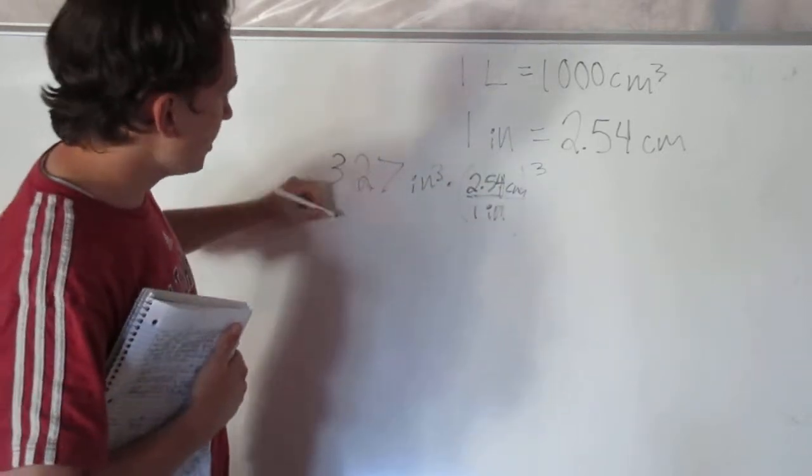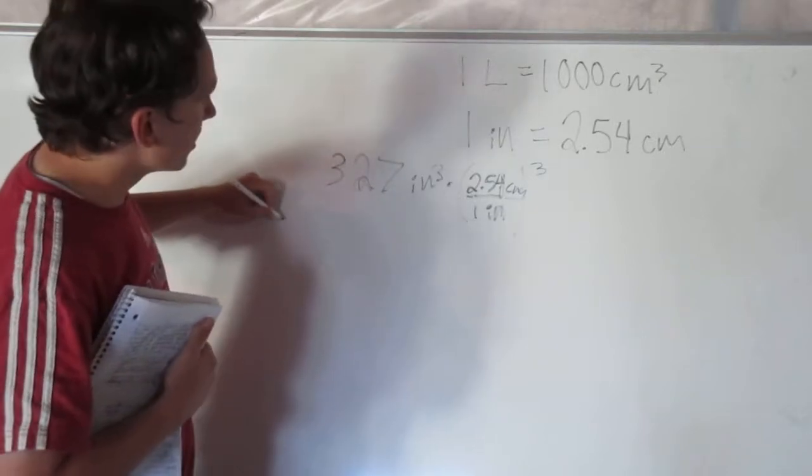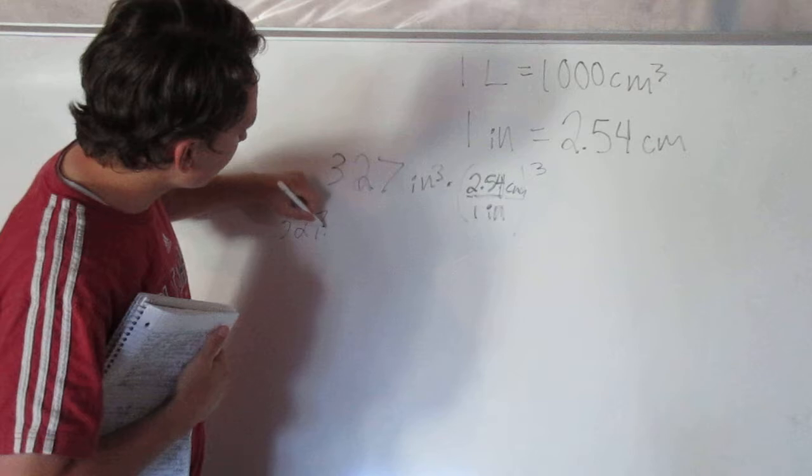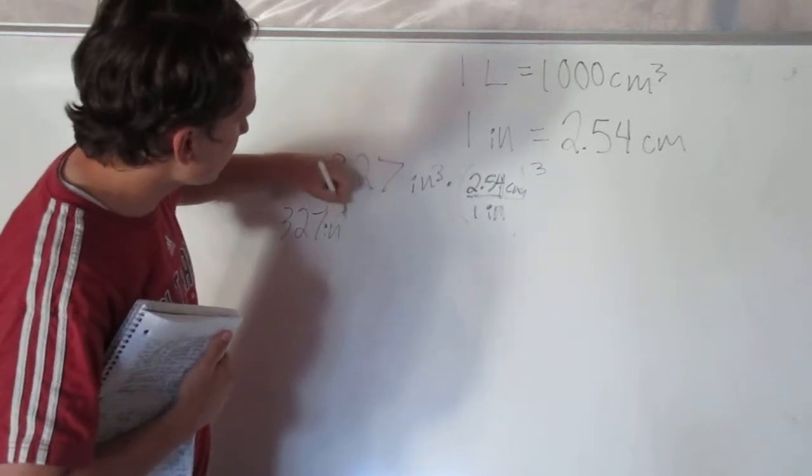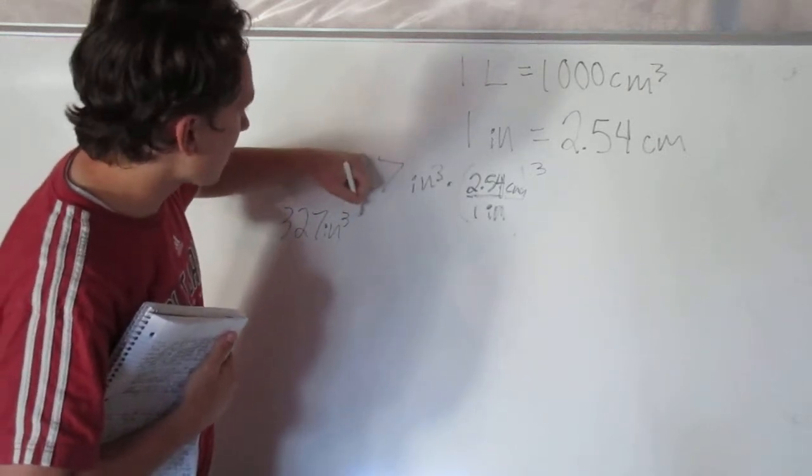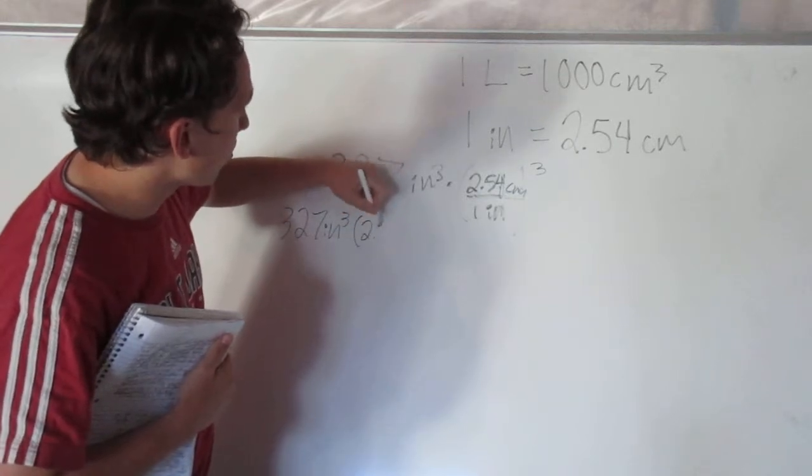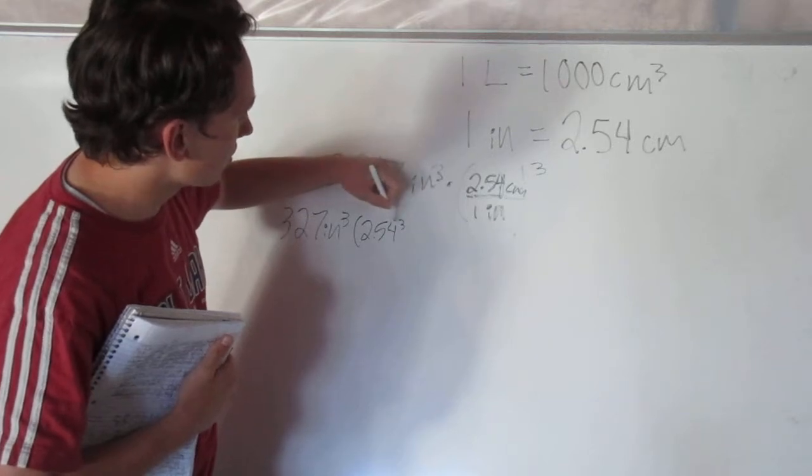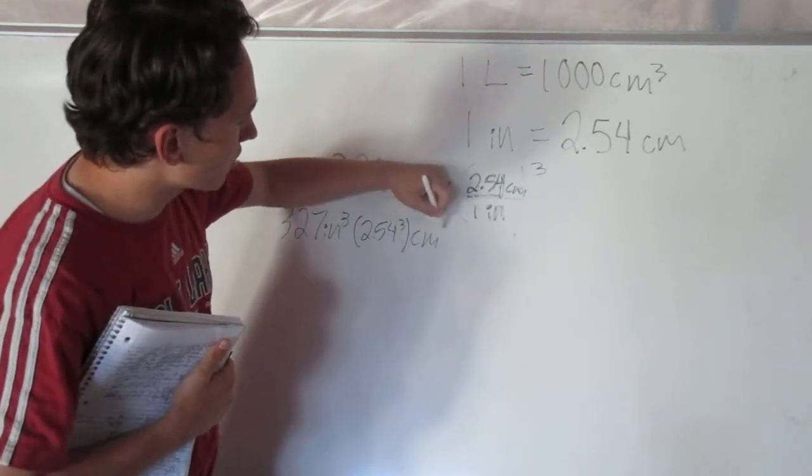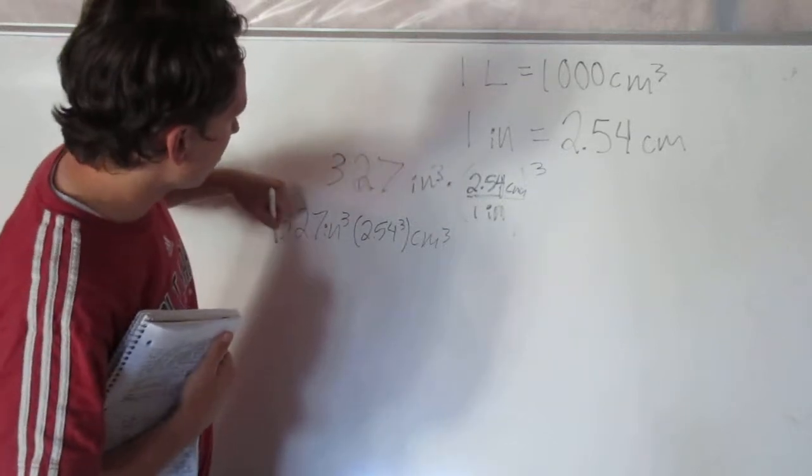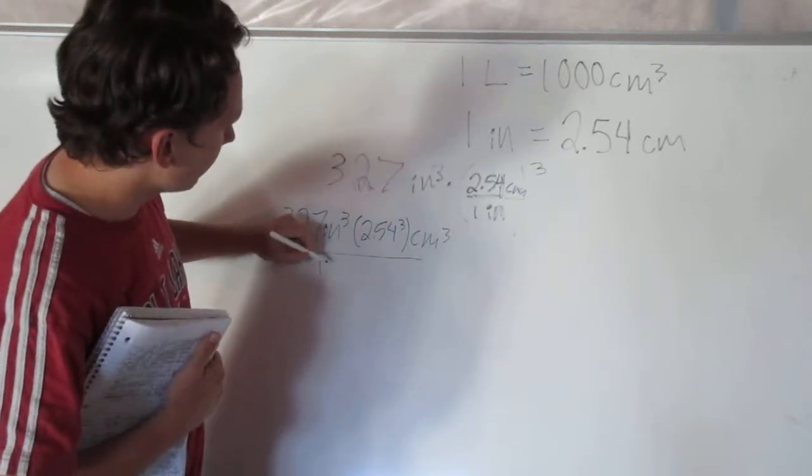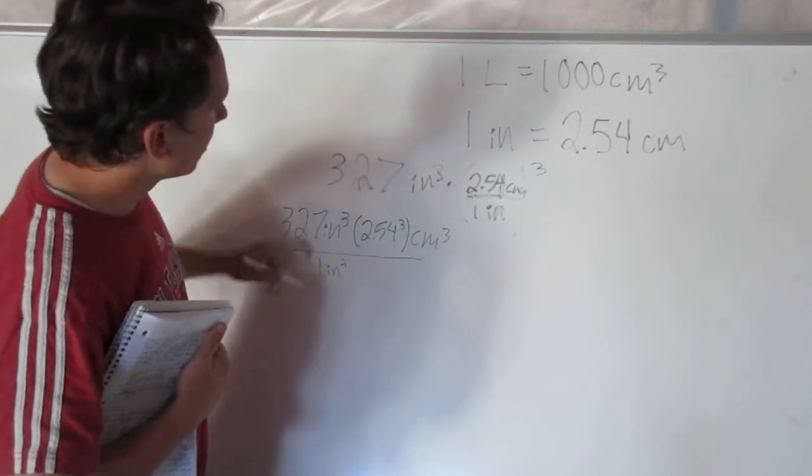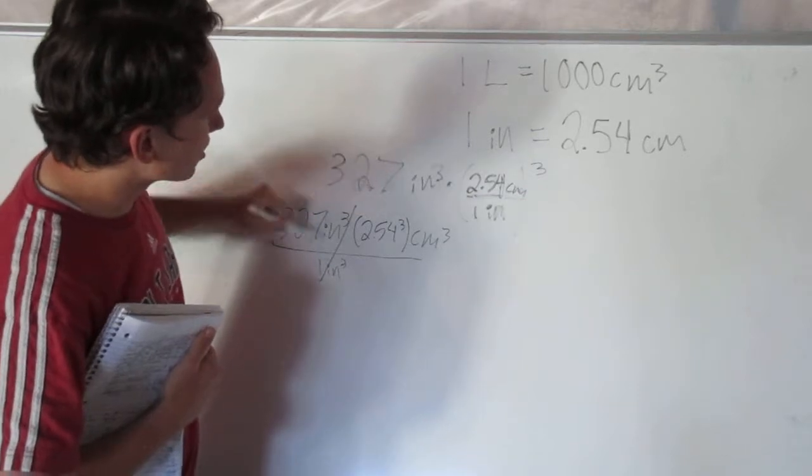And what I get here is we actually get 327 times the inches cubed times 2.54 to the third times centimeters cubed over 1, because 1 cubed is 1 inch cubed. Now obviously these cancel out, which is what we want.